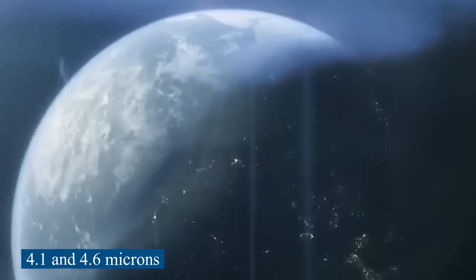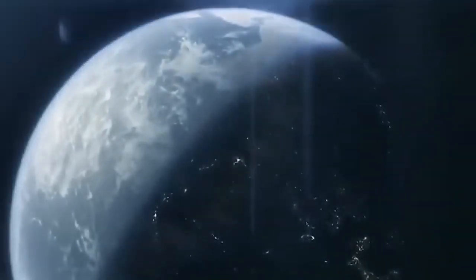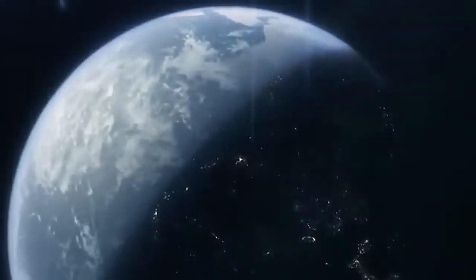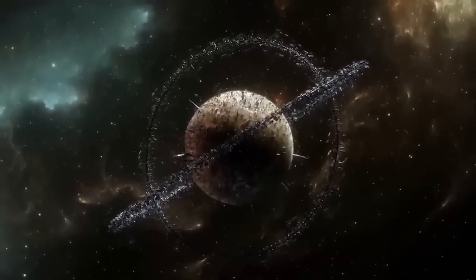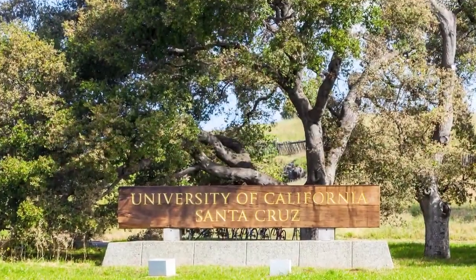The research saw a small hill between 4.1 and 4.6 microns in the spectrum of the planet's atmosphere. This was a clear signal of carbon dioxide, said team leader Natalie Batalha, a professor of astronomy and astrophysics at the University of California at Santa Cruz.